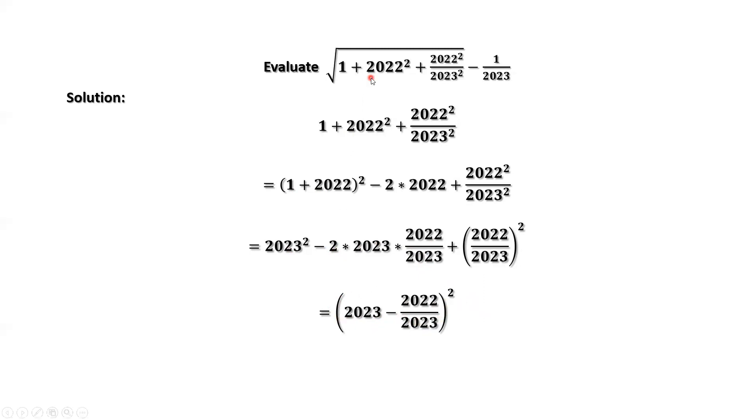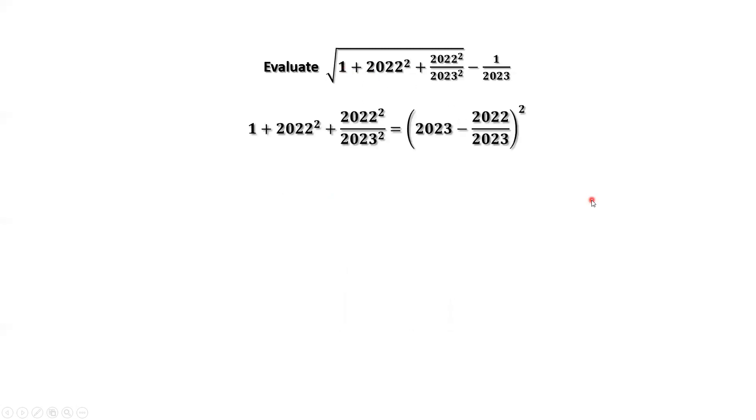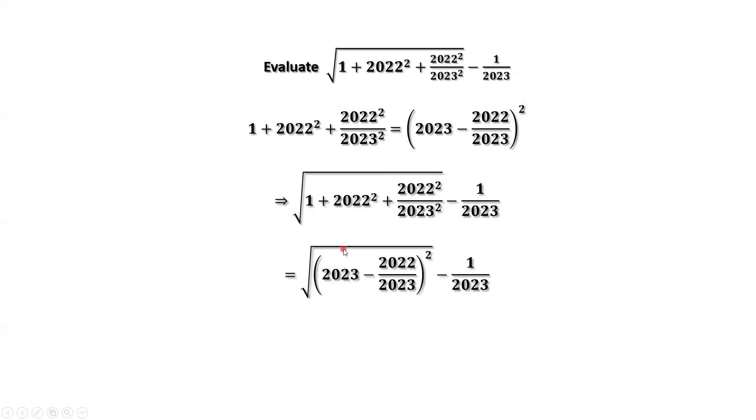This is the inside part of this square root. We can replace the inside part by this result. We can cancel square and the square root sign.